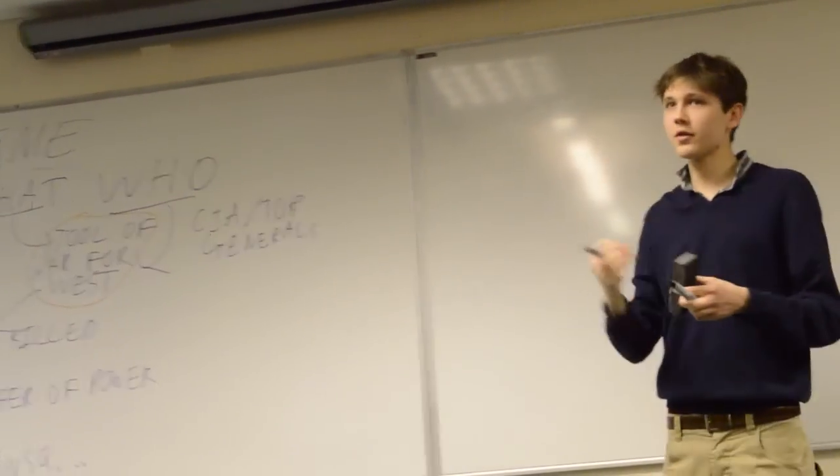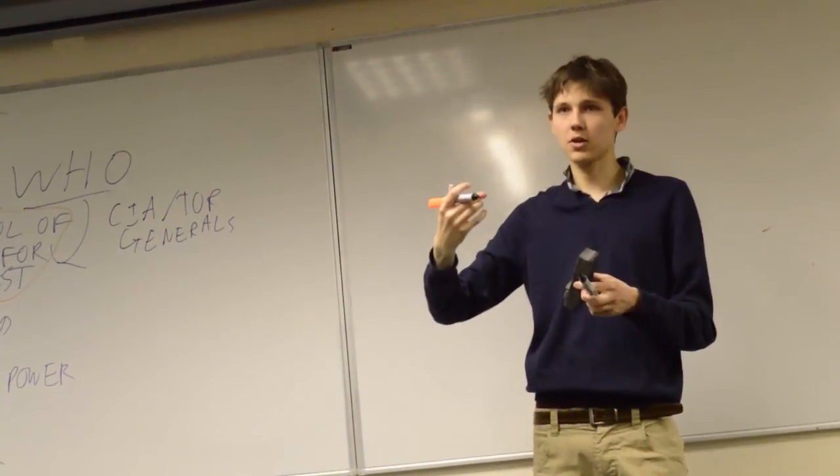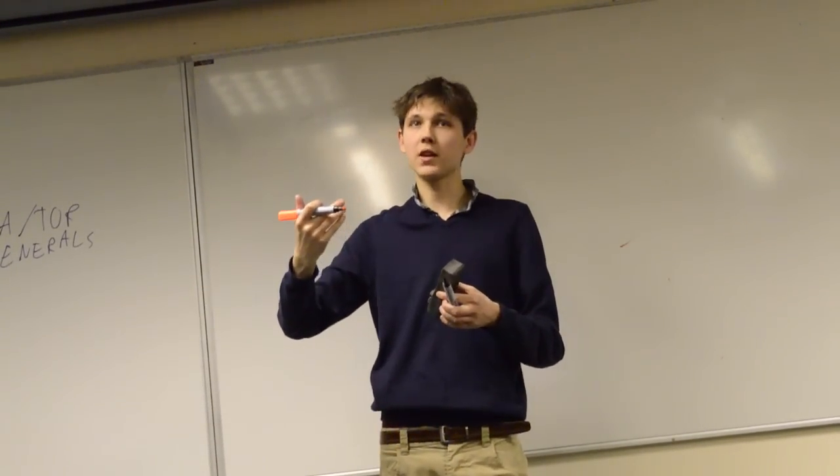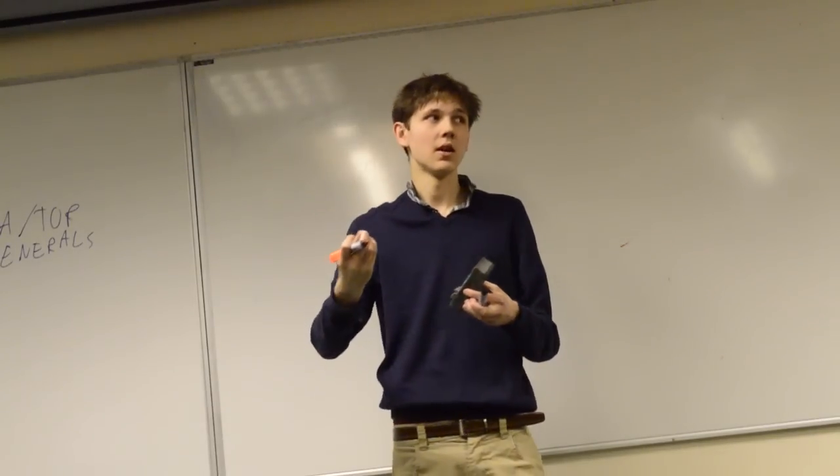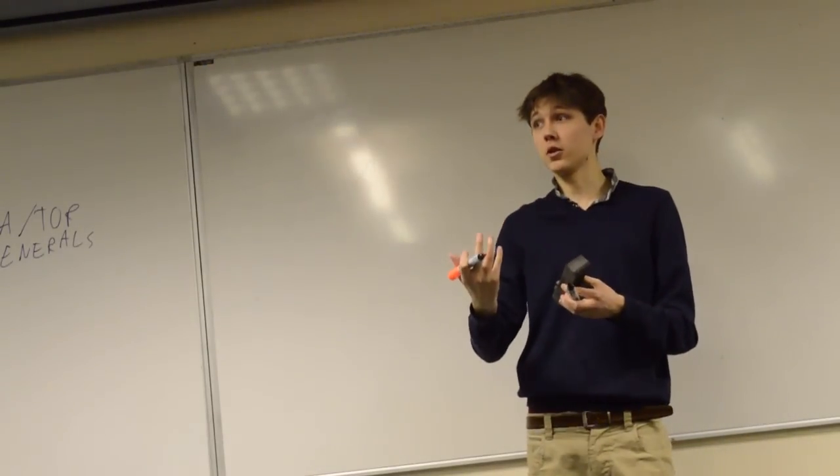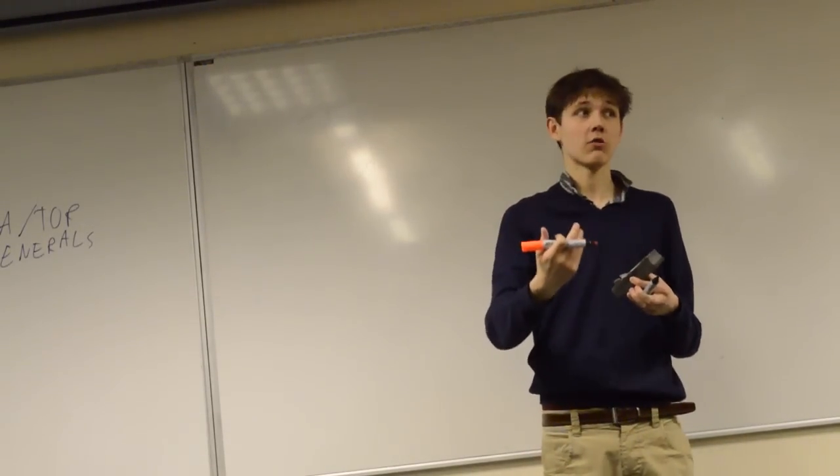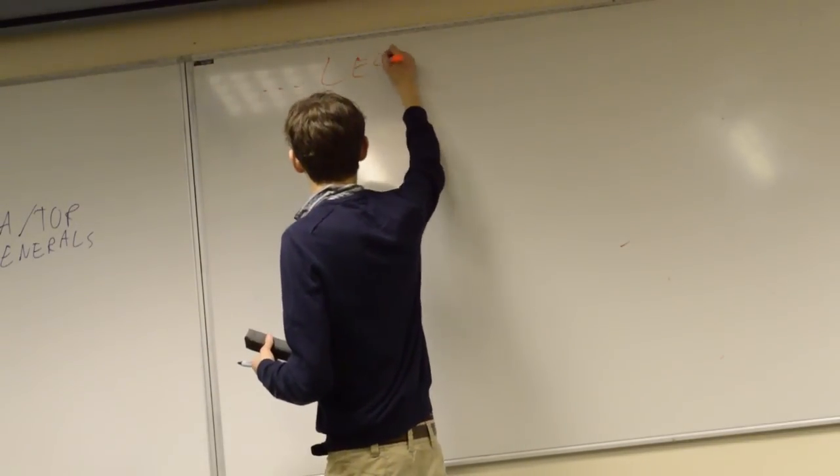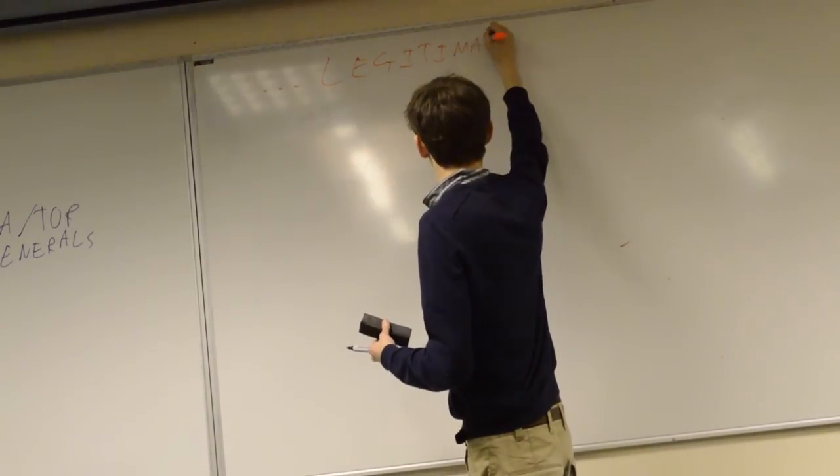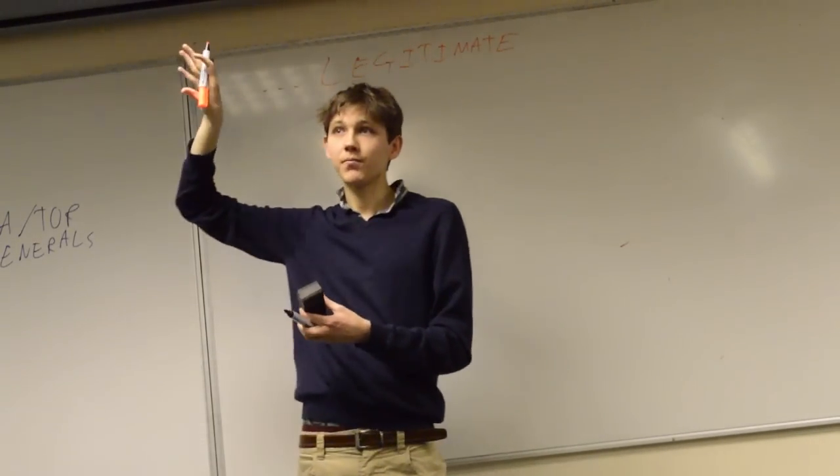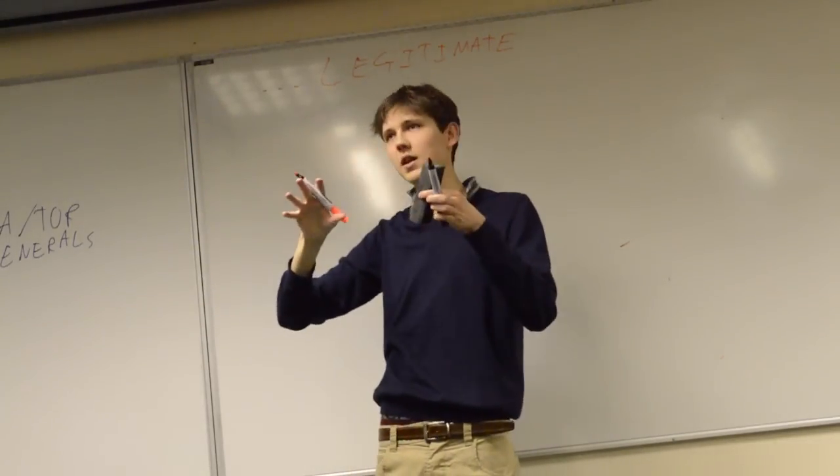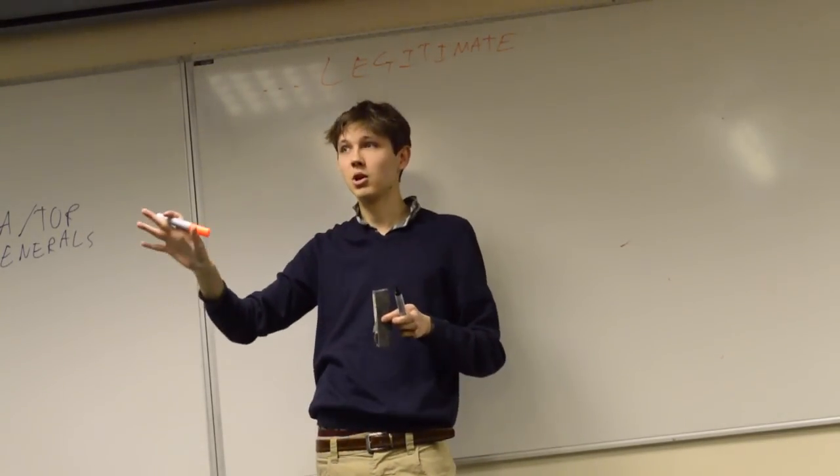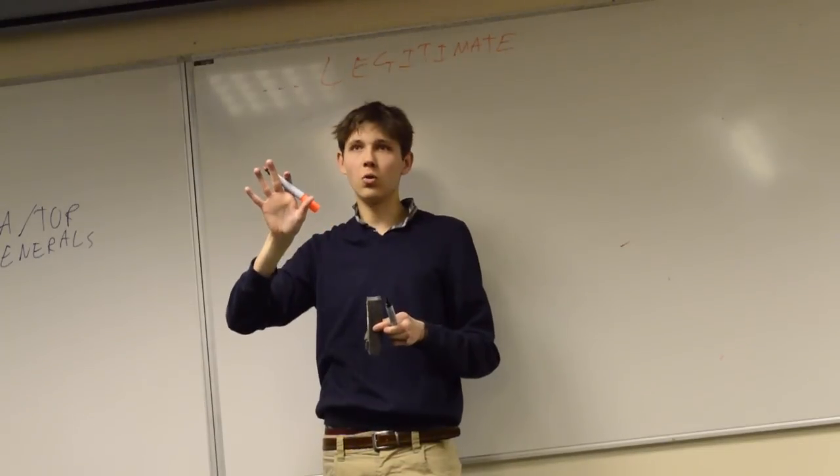So the first question we're asking ourselves when we're looking at what claims we're making is, again, not going to be whether or not something is good or bad. That is not what this debate is. But just to look at the words of the motion and see what they require us to argue. So in this case, the motion is something, something, something legitimate. So we know that at the end of our claims, at the end of the long chain of claims and examples and pieces of analysis we use, we have to be showing that something is either legitimate or illegitimate. And that is clearly distinct from good or bad.